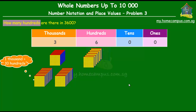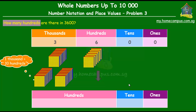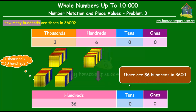Each thousand is equal to ten hundreds, so three thousands give us thirty hundreds. If we modify the place value chart by combining the thousands and hundreds into just one column, we get zero ones, zero tens, and thirty-six hundreds. So there are thirty-six hundreds in three thousand and six hundred.